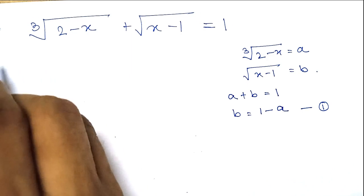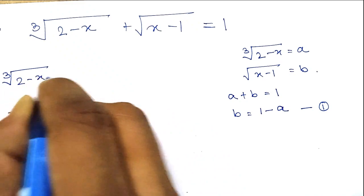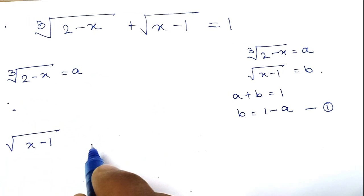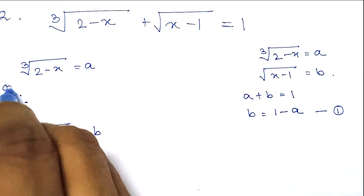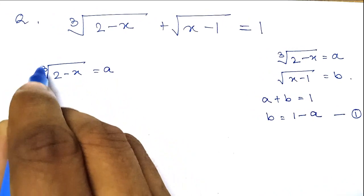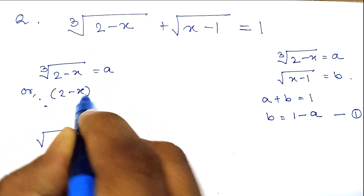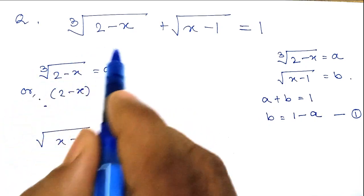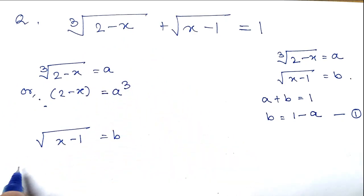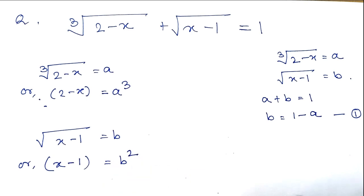We have cube root of (2 minus x) equal to a, and square root of (x minus 1) equal to b. If we cube both sides of the first equation, it becomes 2 minus x equals a cubed, because the cube root and cube cancel out. For the second equation, if we square both sides, it becomes x minus 1 equals b squared.